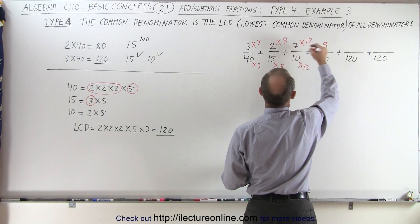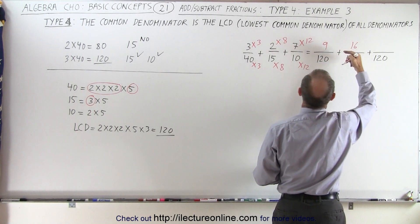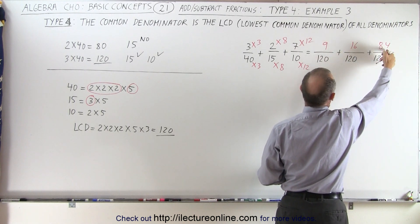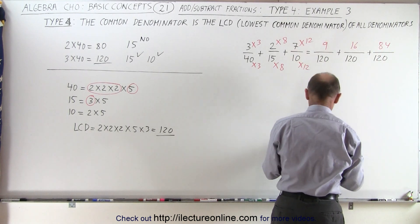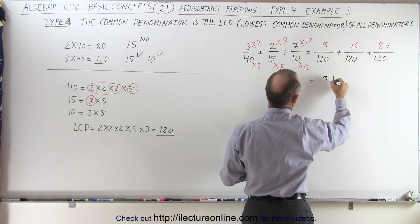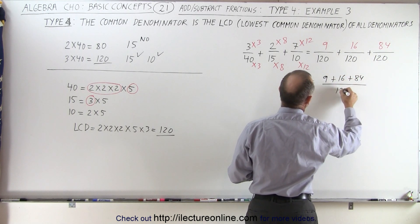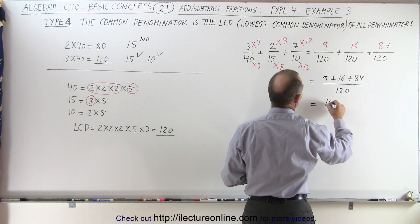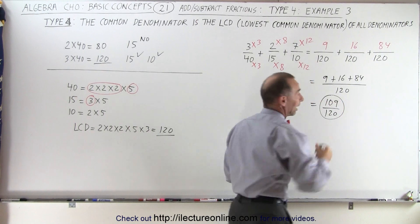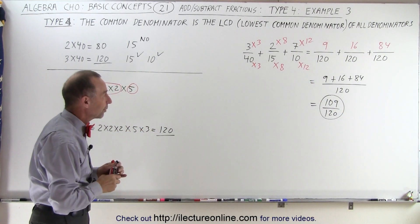So now we can find the new numerators: 3 times 3 is 9, 2 times 8 is 16, and 7 times 12 is 84. Adding them: 84 plus 16 is 100, plus 9 is 109. So this equals 9 plus 16 plus 84 over the common denominator of 120, which is 109 over 120. Since 109 is a prime number, we cannot reduce that fraction any further.